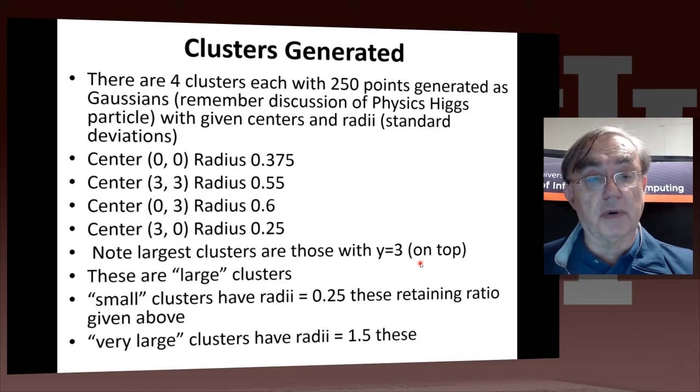We have four centers, basically the corners of a square of side 3, starting at the origin and going up to the position 3,3. The basic set of four clusters, which are called the large set, have radii 0.375, 0.55, 0.6, and 0.25. Those, I say, are large.